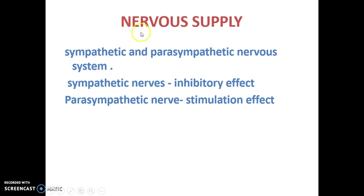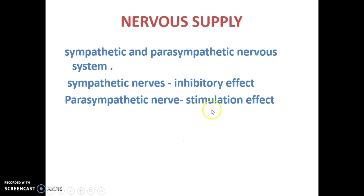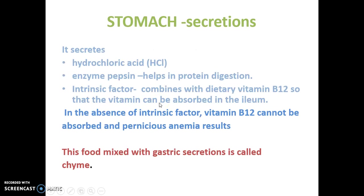Nervous supply to the GI tract is mainly from the sympathetic and parasympathetic nervous systems. The sympathetic nervous system has an inhibitory effect, decreasing secretions and peristaltic movement. The parasympathetic nervous system increases peristaltic movement and increases secretion.